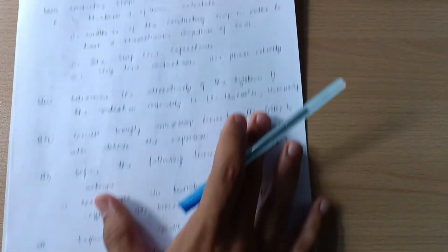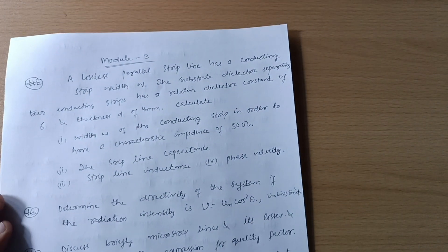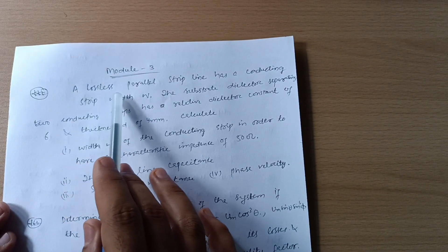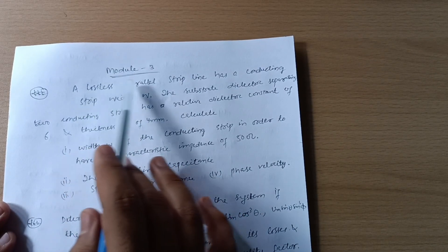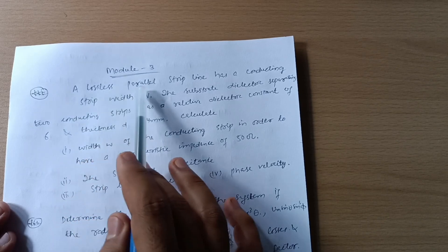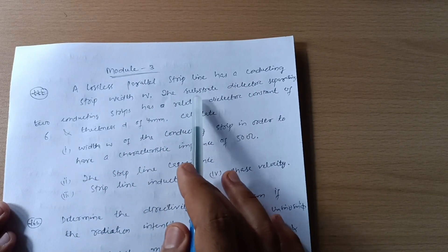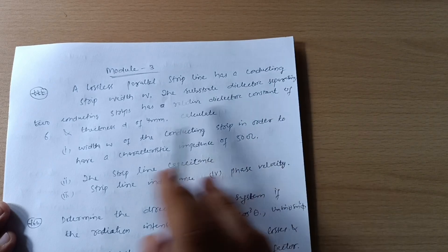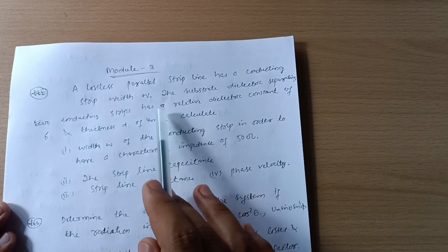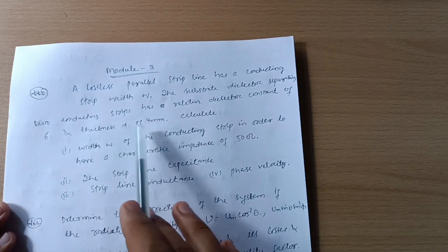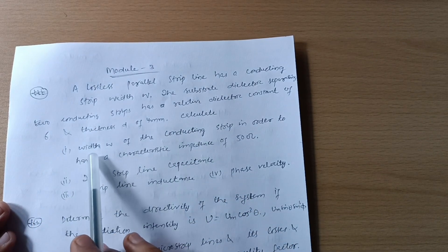Now let us discuss Model 3, in which one definite question is there and it is repeatedly coming in the examination. That is: a lossless parallel strip line has a conducting strip width w. The substrate dielectric separating two conducting strips has a relative dielectric constant of 6 and thickness of 4 mm.